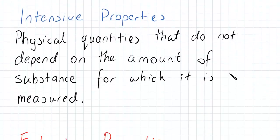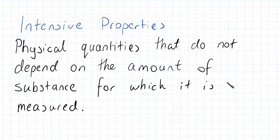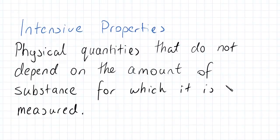So the first type of property that we'll be looking at is what we call intensive properties. Intensive properties are physical quantities that do not depend on the amount of substance for which it is measured.